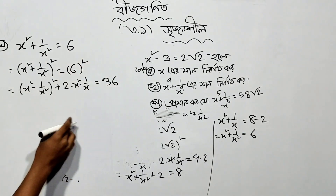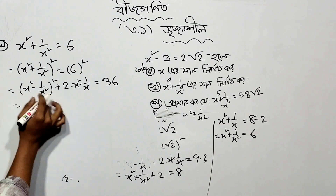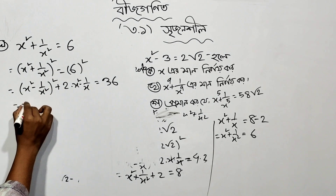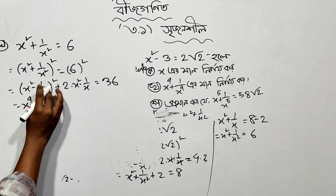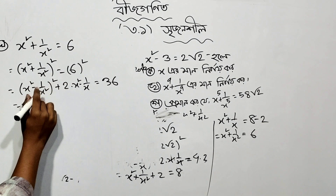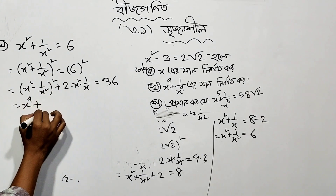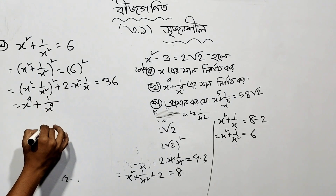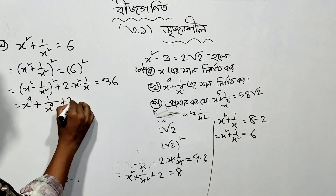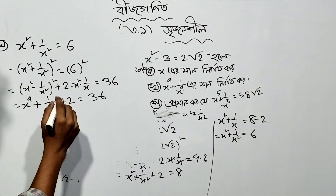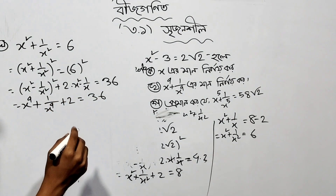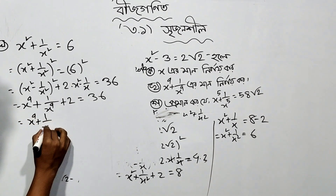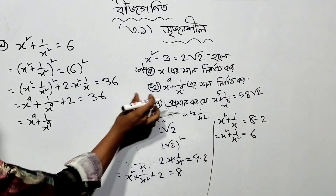So we have x squared minus 1 by x squared. Let's check — x is created. Now for the formula, a plus 1 by a equals root 2, and a squared plus 1 by a squared equals 360. So a plus 2 equals 36. Therefore x to the power 4 plus 1 by x to the power 4...